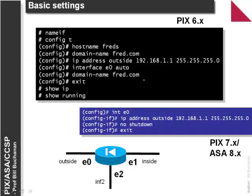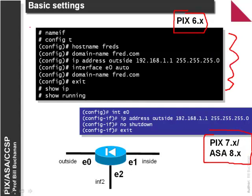The top screen shows PIX 6.0 and the bottom screen PIX 7 and PIX 8. Some certification questions still relate to PIX 6 so we'll cover both. The basic PIX has E0, E1 is inside, and INF2 is E2. For newer versions of PIX we need to define these names before we use them, but in previous versions they were already defined.